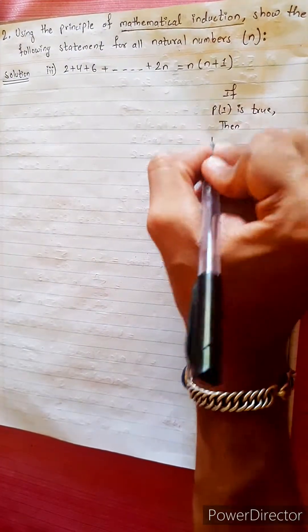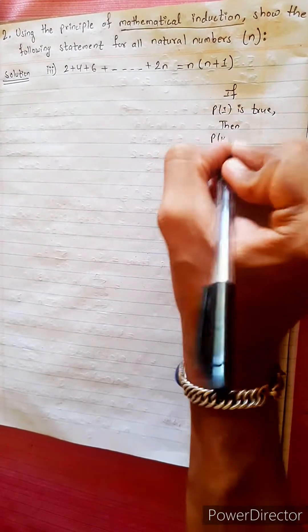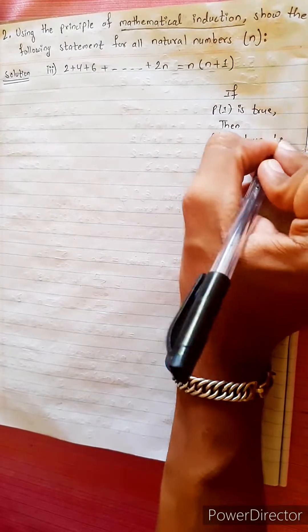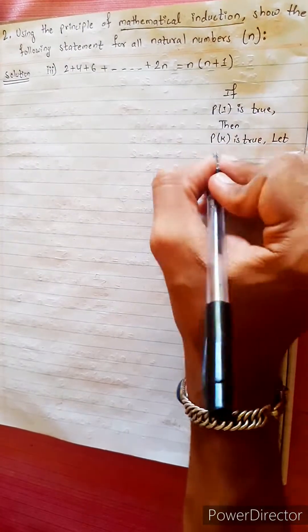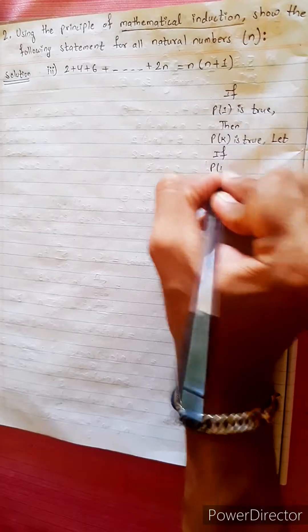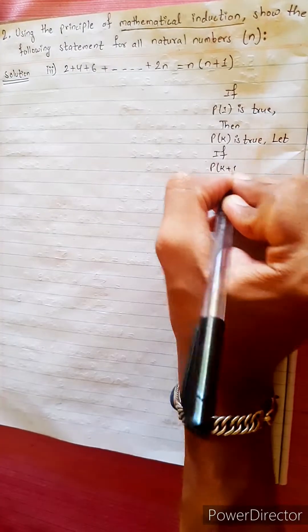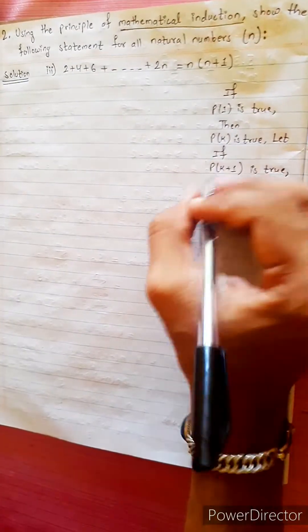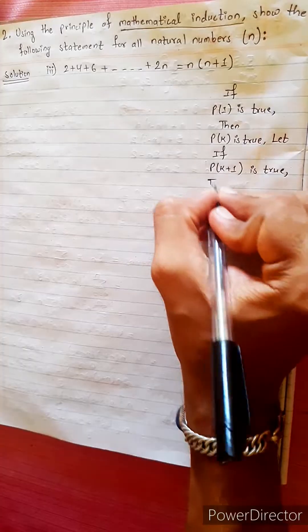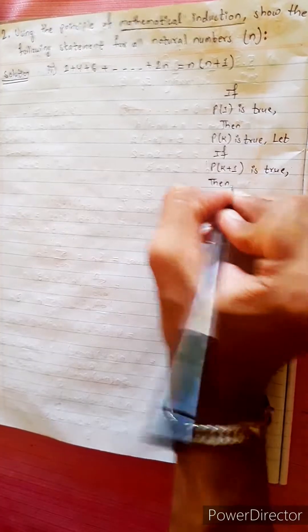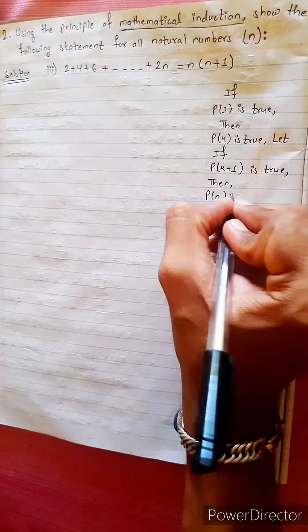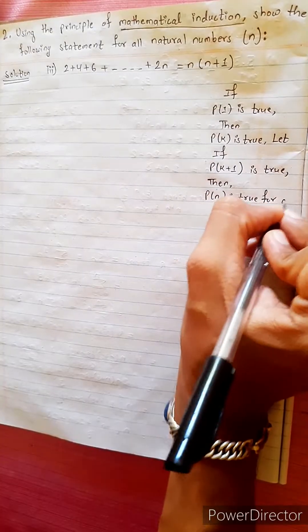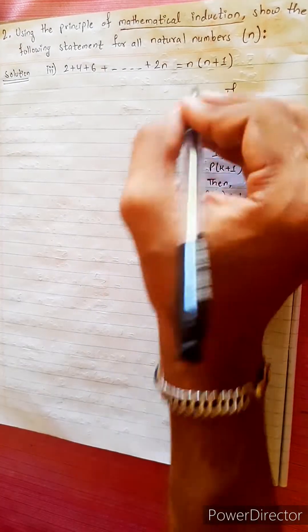Then, if Pk is true and Pk plus 1 is true, then we can see Pn is true for all natural numbers.